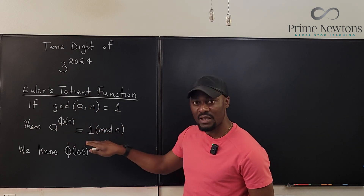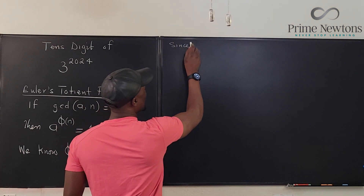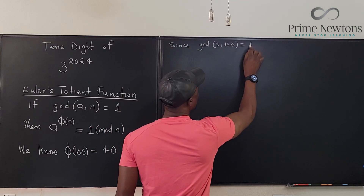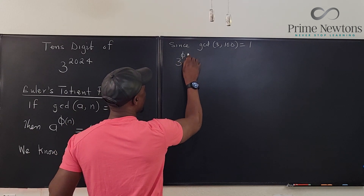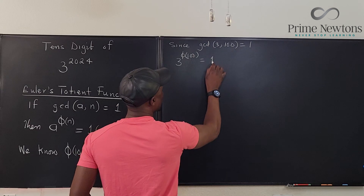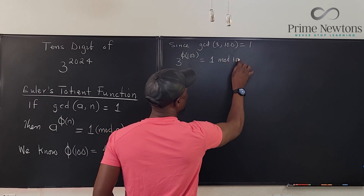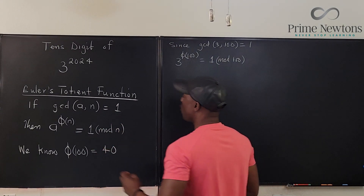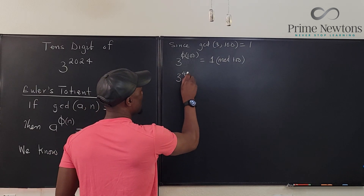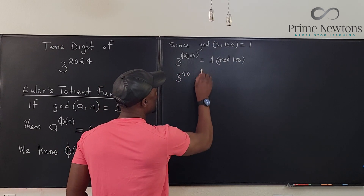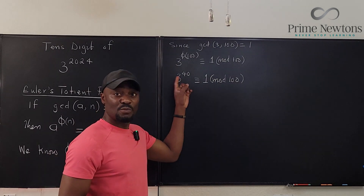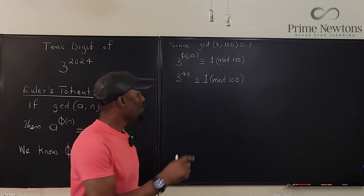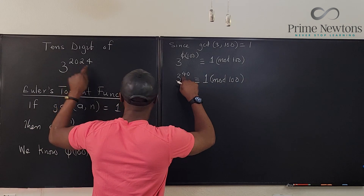Since the GCD of 3 and 100 is 1, we can say by Euler's totient function that 3 raised to phi of 100 is congruent to 1 mod 100. So 3 raised to the power 40 is congruent to 1 mod 100 — meaning when you raise 3 to the power 40 and divide by 100, the last two digits are 01. But we want power 2024, not 40.